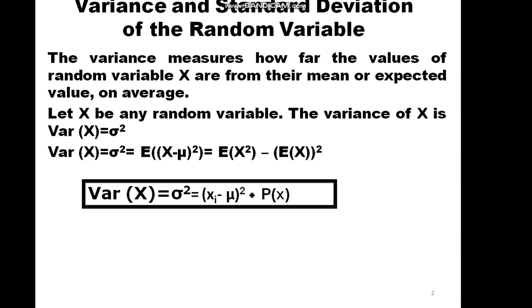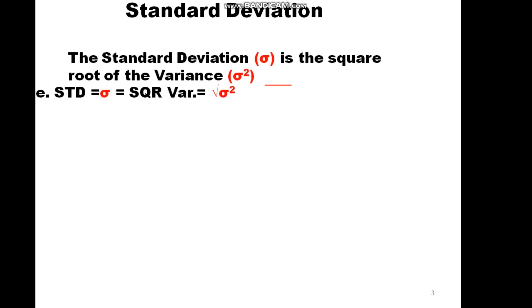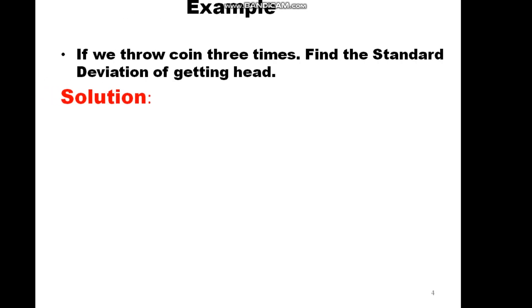The standard deviation is the square root of the variance. So the standard deviation Sigma equals plus or minus the square root of Sigma squared.